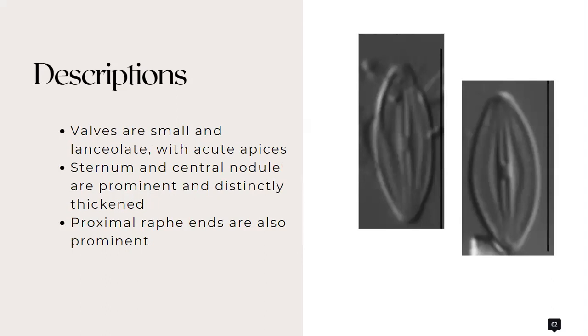The valves are small and lanceolate with acute apices. The sternum and the central nodule are prominent and distinctly thickened. The proximal raphe ends are also prominent. The depressions contain small costae which are called the microcostae and in living cells, two plastids are present near the cingulum.